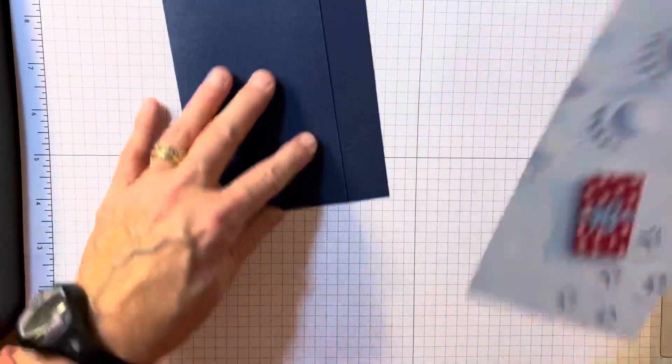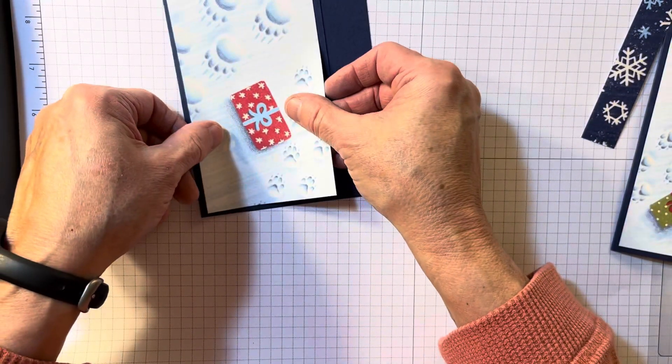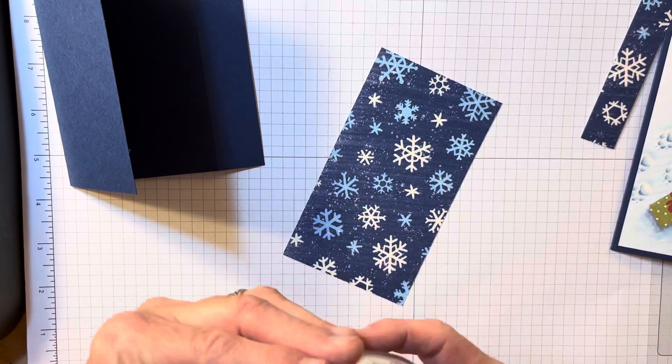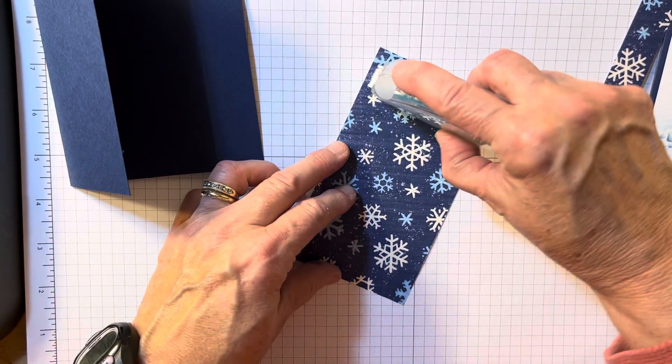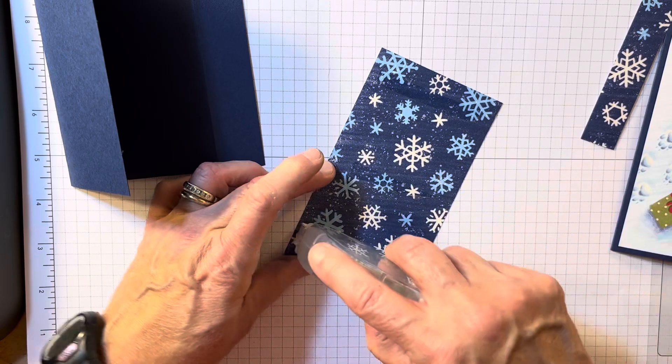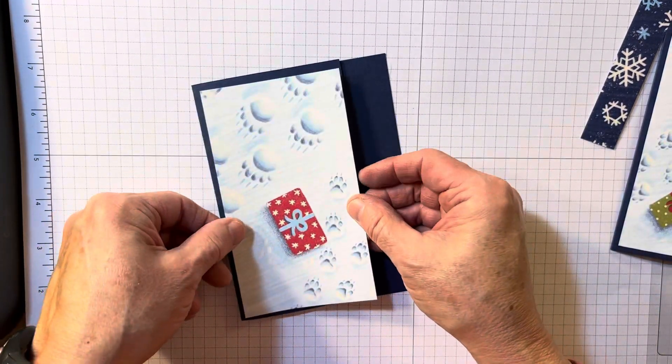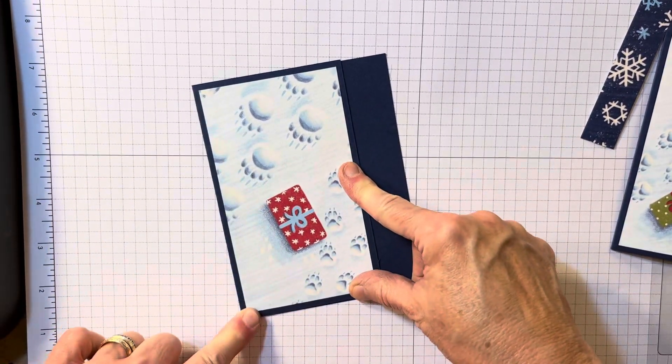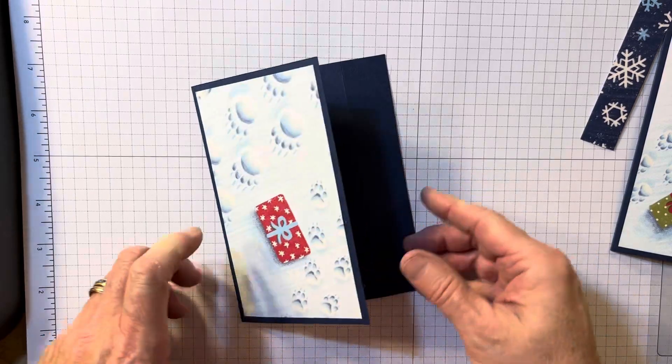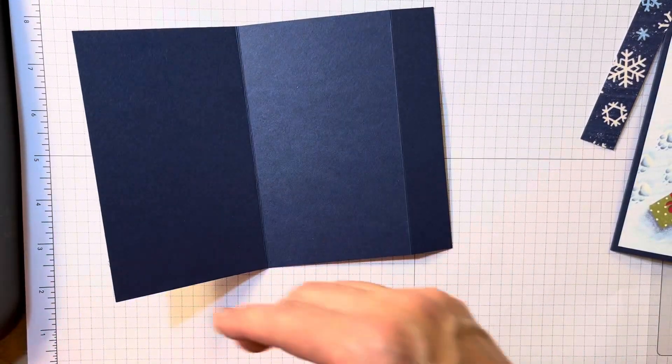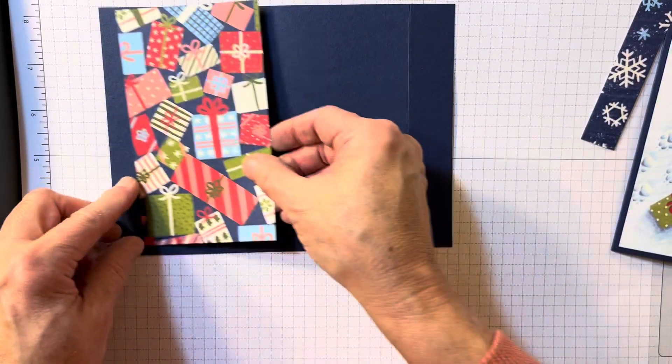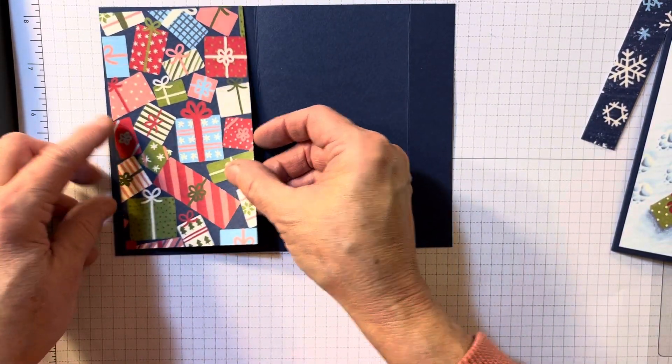So, on the front, I just thought this was cute with the footprints of the beautiful bear there and of course, you could use either side of the designer series paper. That's what's so beautiful about this paper. So, three by five and a quarter. I chose another piece because I kind of had the present there.